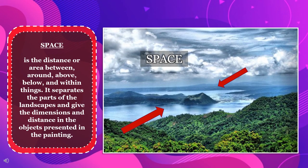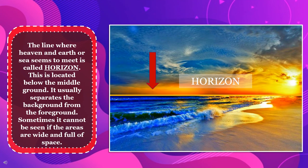Space is the distance or area between, around, above, below, and within things. It separates the parts of the landscape and gives the dimensions and distance of the objects presented in the painting. The line where heaven and earth or sea seems to meet is called the horizon. This is located below the middle ground. It usually separates the background from the foreground. Sometimes it cannot be seen if the areas are wide and full of space.